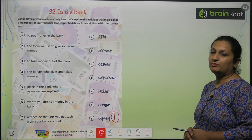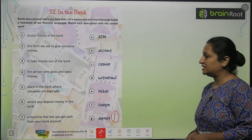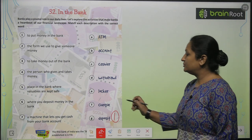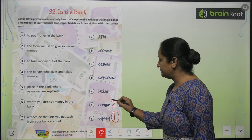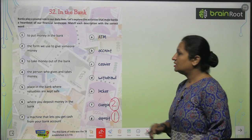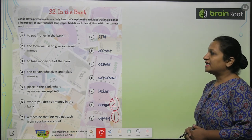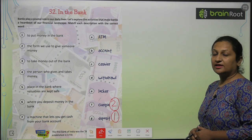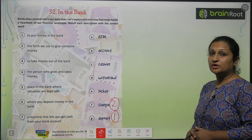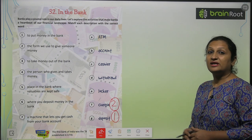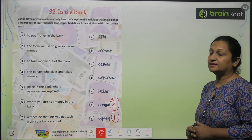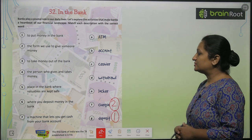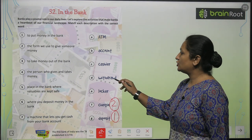The form we use to give someone money - hum kis form mein de sakte hai money kisi ko? Hum cheque ki form mein de sakte hai. To take money out of the bank - jab hume zarurat hoti hai to hum money withdraw bhi karte hai. So is mein aega withdrawal. You will write three here.